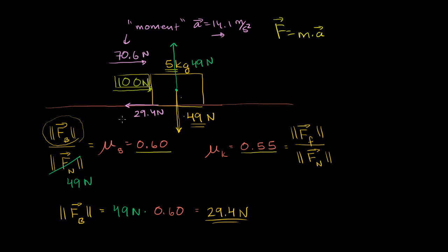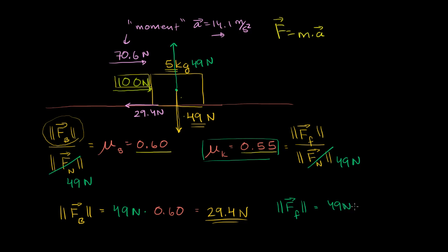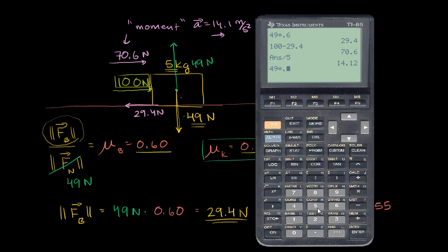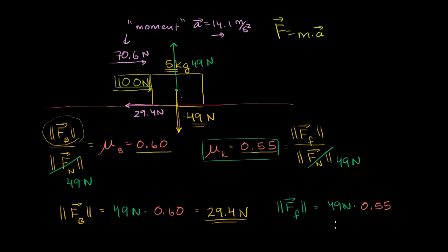Once the block starts moving, the coefficient of kinetic friction takes over. We've gotten the surfaces out of their grooves, so they're gliding past each other with less resistance. The force of kinetic friction is 49 Newtons times 0.55, which equals 26.95 Newtons. This friction force always acts against our motion — so as soon as we move to the right, the friction force points to the left.